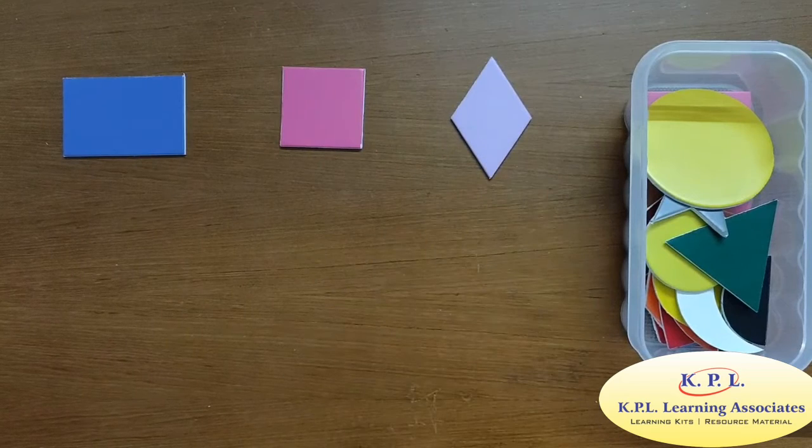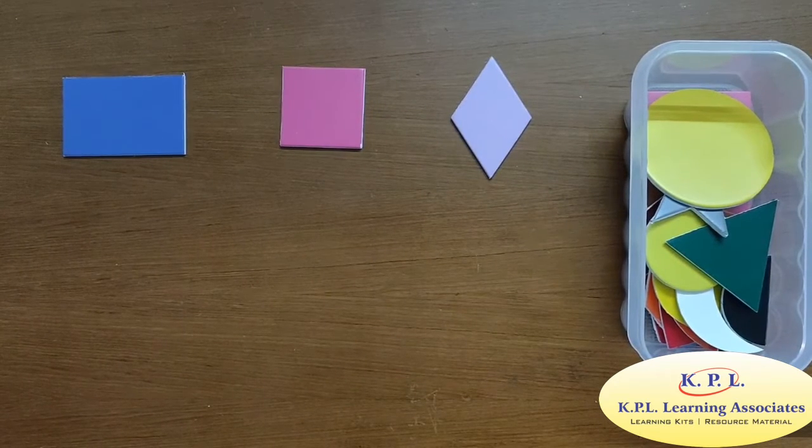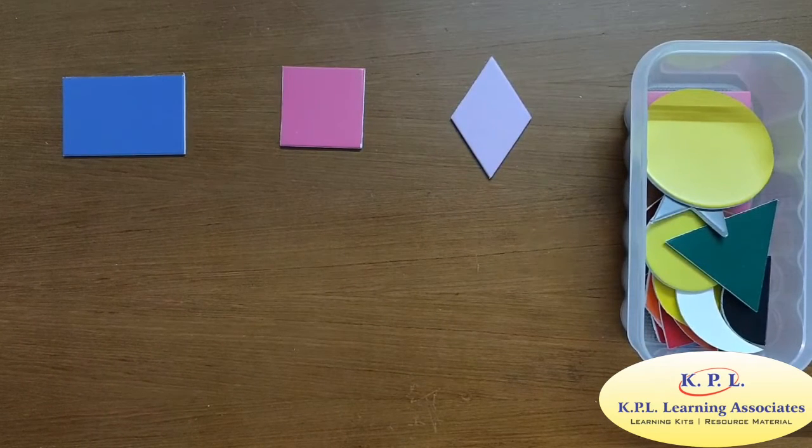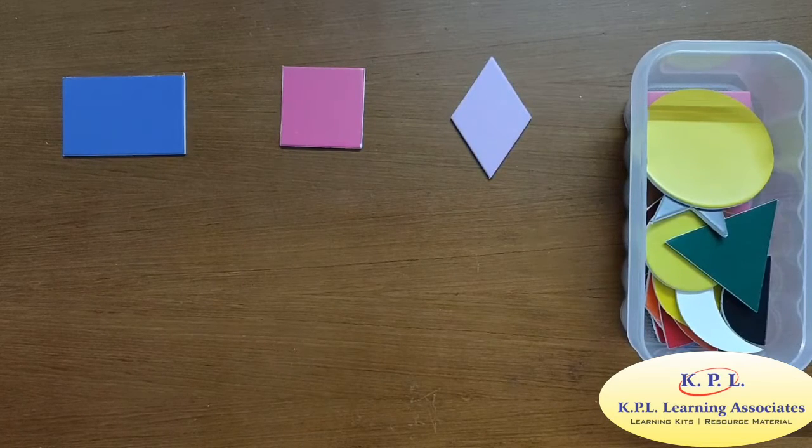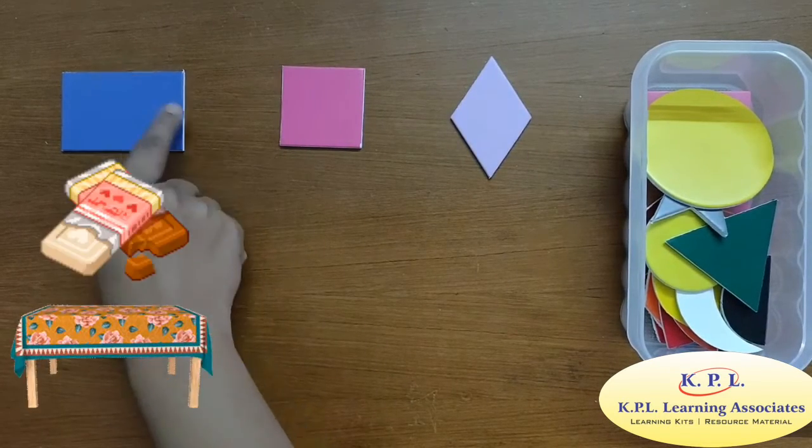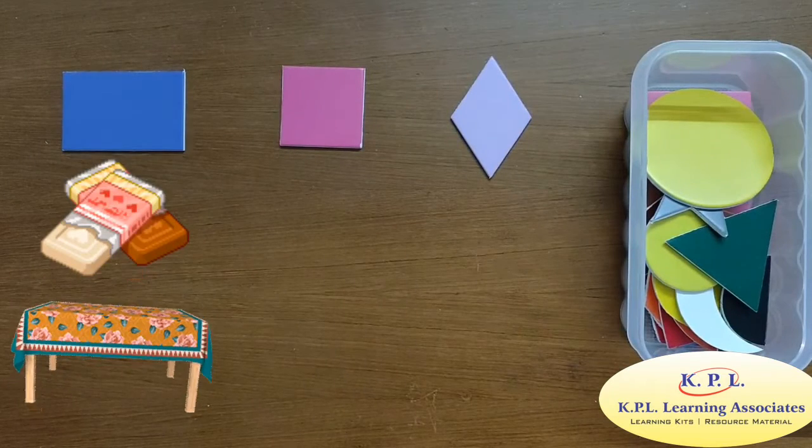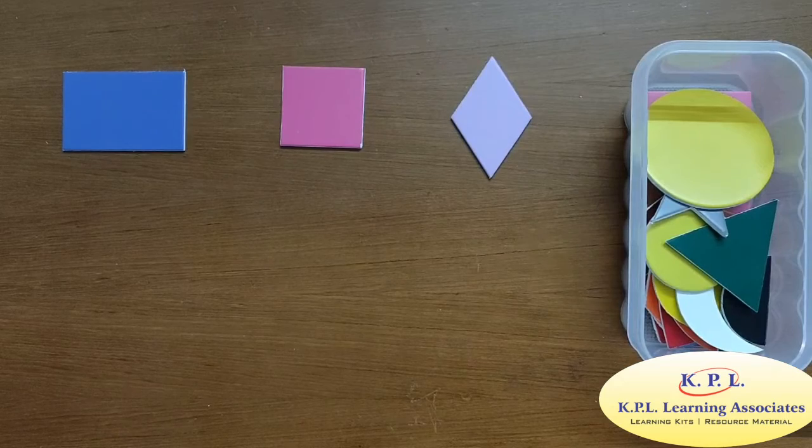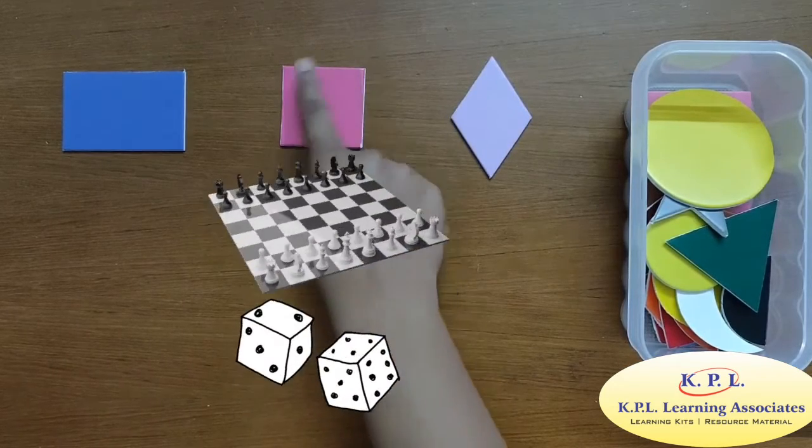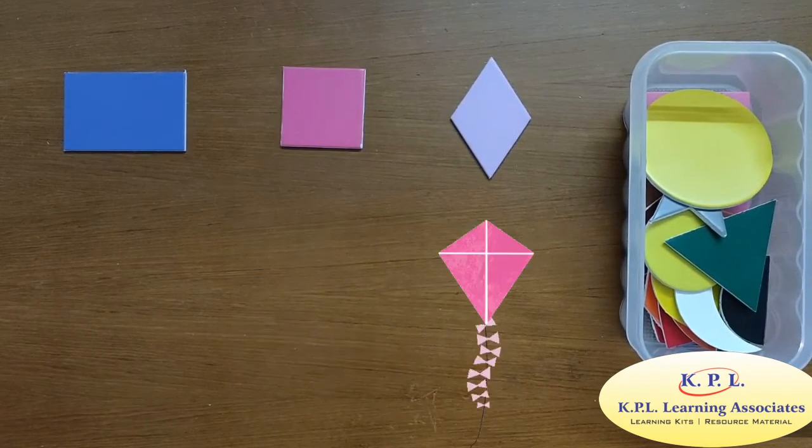Can you make difference in these three? Yes. In rectangle, opposite sides are of equal length. Like in chocolate, table. In square, all four sides are equal. Like in chessboard, dice. And rhombus is like kite.